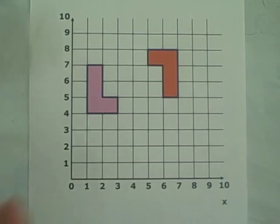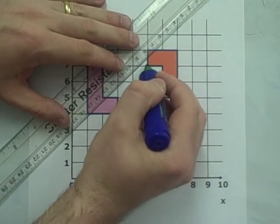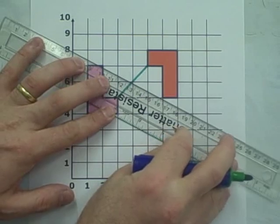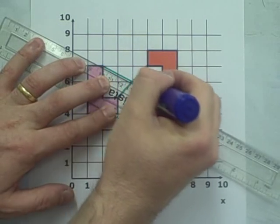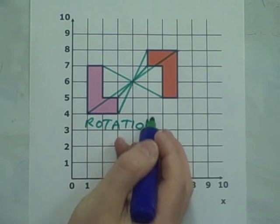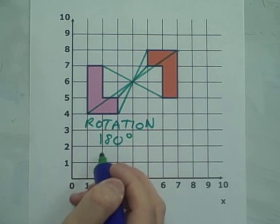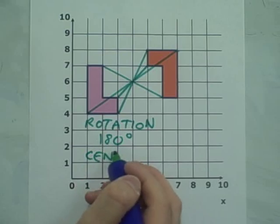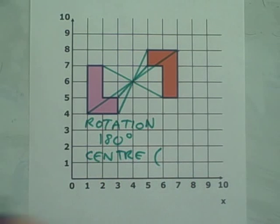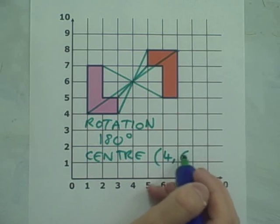This is a 180 degree rotation. All you have to do for a 180 degree rotation is to join up corresponding points on the object and the image. They will all intersect at the same place, the centre of rotation. A 180 degree rotation could also be described as a negative enlargement with a scale factor of -1 about the same centre point. The centre of rotation is at (4,6).